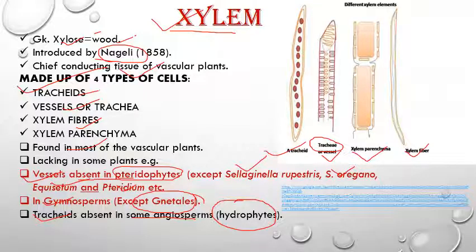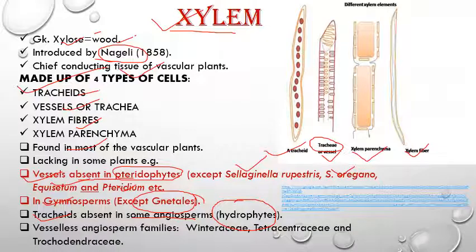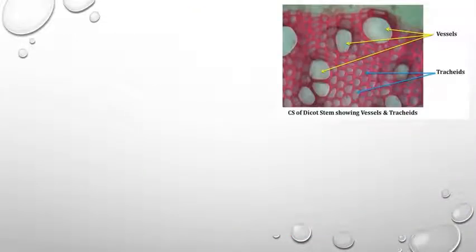In some angiosperms, tracheids are absent — particularly in hydrophytes (aquatic plants). There are also some vessel-less angiosperms; families like Winteraceae, Tetracentraceae, and Trochodendraceae lack vessels. In cross-section of a plant stem, the hollow structures are vessels and the smaller thick-walled structures are tracheids.